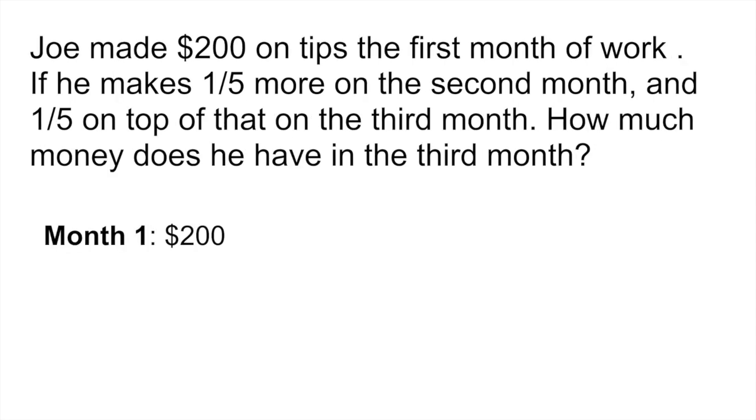So we know that on month one Joe made $200 in tips and then in month two he made one-fifth more than that. So in order to find out how much money more he made, you would multiply that 200 times one-fifth and that gives you $40. So at the end of month two he has $240.